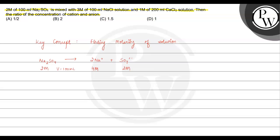The second solution is NaCl. NaCl dissociates into 1 Na⁺ positive ion plus 1 Cl⁻ negative ion. The molarity is 3 molar and the volume is 100 ml. So NaCl gives 3 molar Na⁺ and 3 molar Cl⁻.